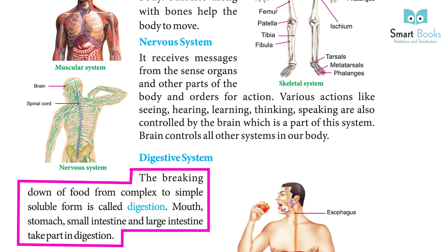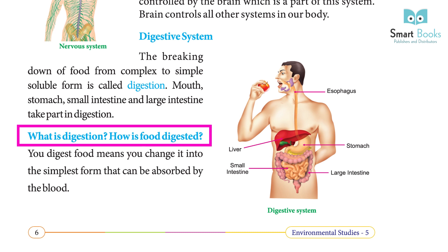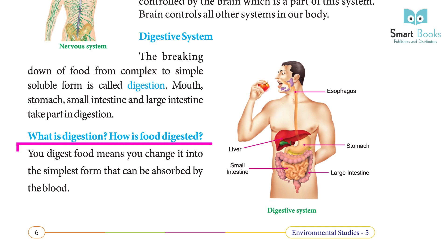The digestive system: the breaking down of food from complex to simple soluble form is called digestion. The mouth, stomach, small intestine, and large intestine take part in digestion. Digestion means changing food into the simplest form that can be absorbed by the blood.